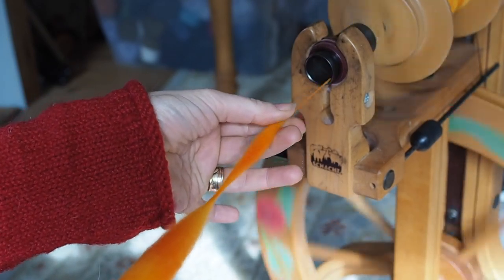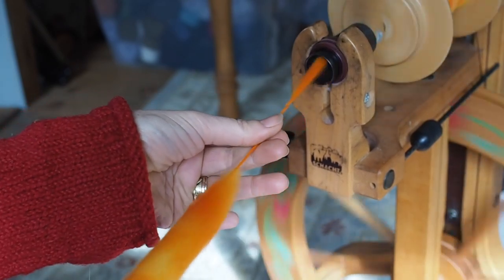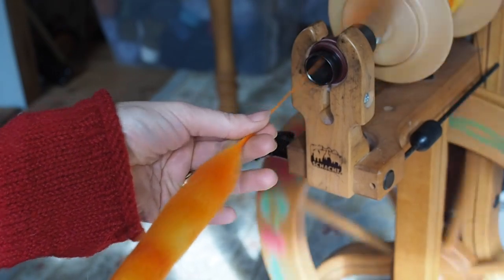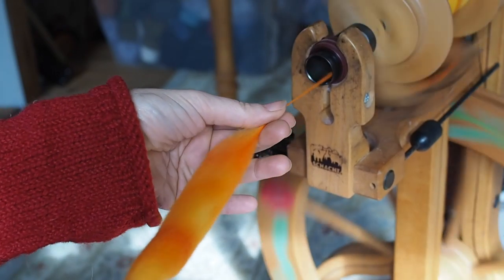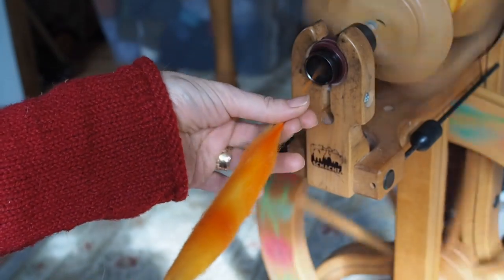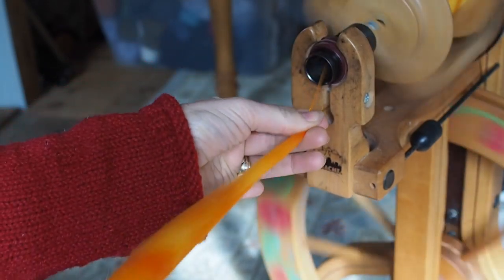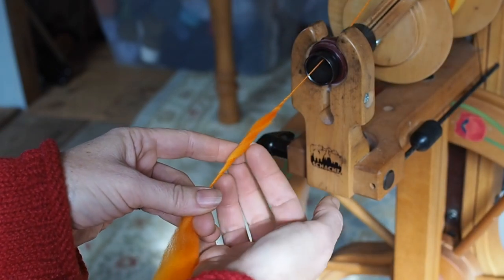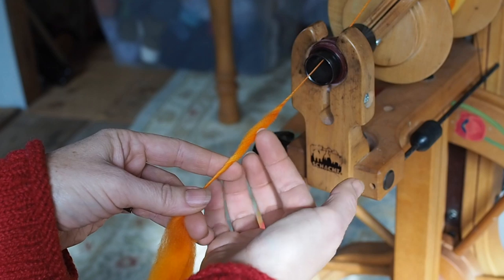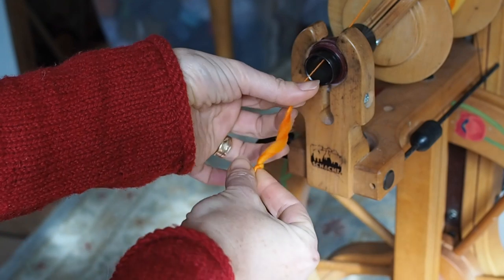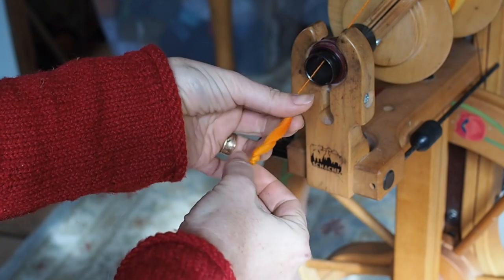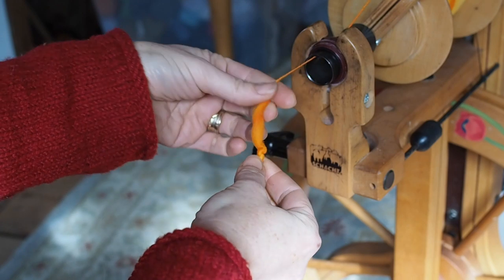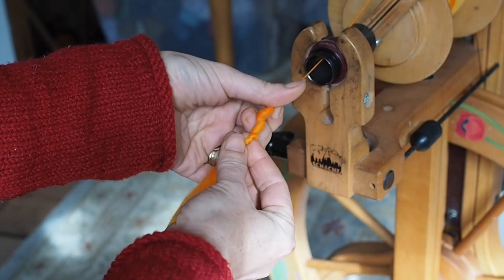I also really like how it looks if you have a fiber that has more than one color in it, like this yellow and orange. If you can make a fluff that has two colors, that twist ends up being really cool looking because it'll come out reddish, orangish and yellow.